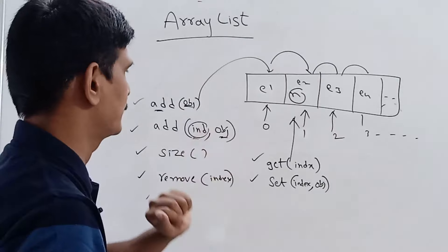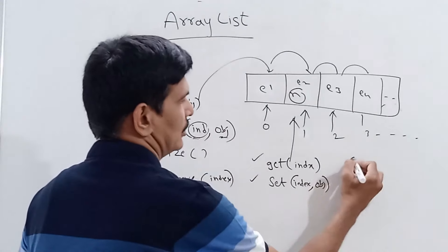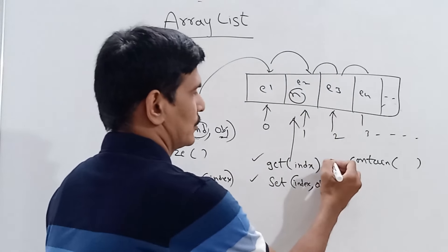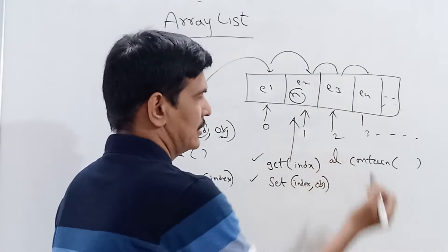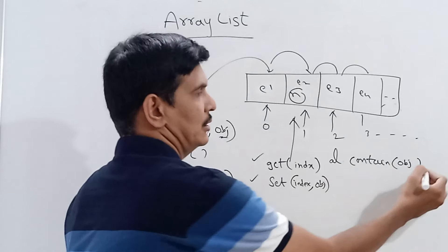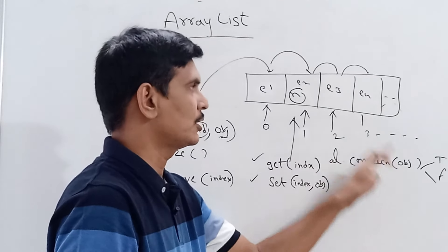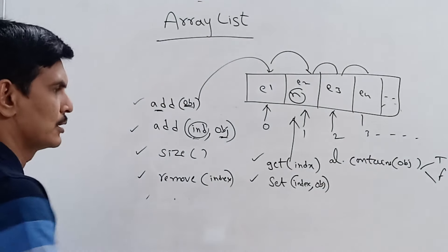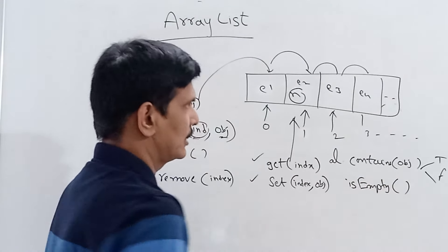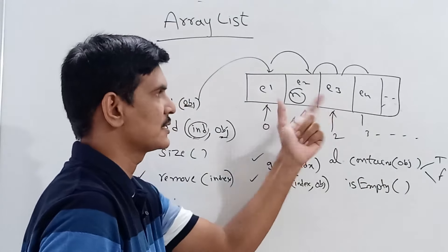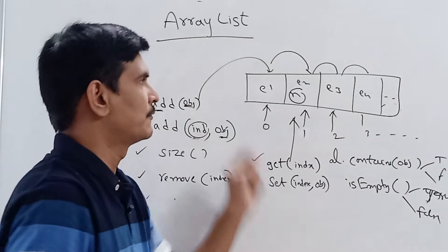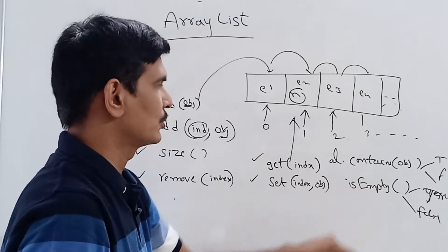The contains(object) method searches whether an object or element is present in the ArrayList — it returns a boolean true or false. The isEmpty() method verifies whether the ArrayList is empty or has some elements. If completely empty, it returns true; if it has values, it returns false.